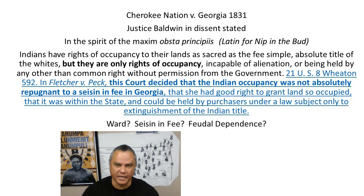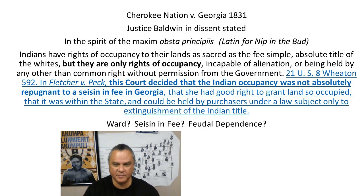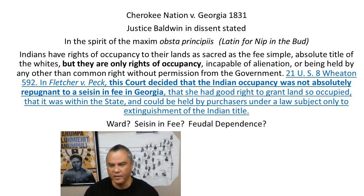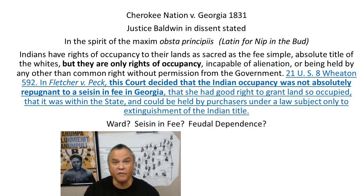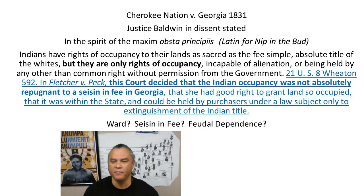Justice Baldwin, in the same case, will dissent. He will say, in the spirit of the maxim 'opsta principis' — which is 'let's nip it in the bud' — he's very pro-state, very anti-tribe. He says Indians have a right of occupancy to their lands, sacred as fee simple absolute title to the whites. But they are only rights of occupancy, and they are incapable of alienation. He goes on to say that this court decided that the Indian occupancy was not absolutely repugnant to a seisin in fee in Georgia.